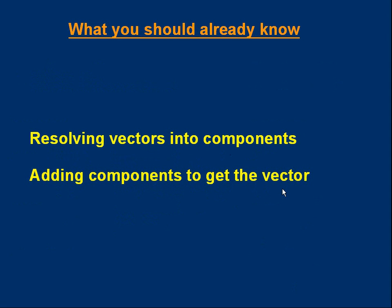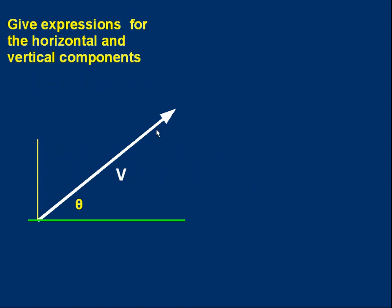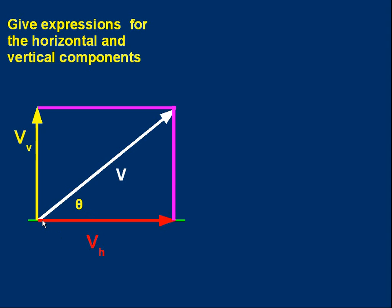There's vector v, which could be a velocity at an angle theta to the horizontal. Can you give expressions for the horizontal and vertical components — a formula in terms of v, sine theta, and cos theta? Pause the video and see if you can do that. The vertical component will be v sine theta, and the horizontal component will be v cos theta. These are covered in a separate lesson, so if you're not familiar with how to resolve a vector, you need to make sure you can do it or you won't be able to do the calculations later on.